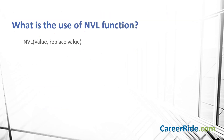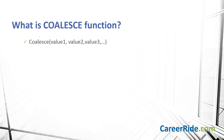What is the use of the NVL function? The NVL function is used to replace a null value with another value. It lets you substitute a value when a null value is encountered. What is the COALESCE function? The COALESCE function returns the first not-null expression in a list. If all the values in the list are null, then the COALESCE function will return null.